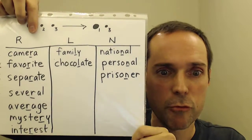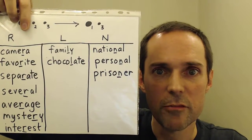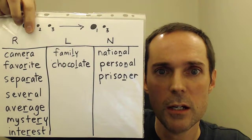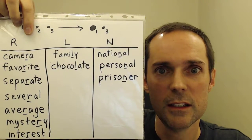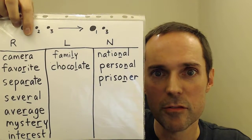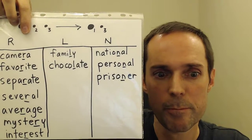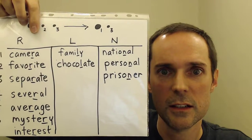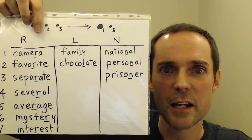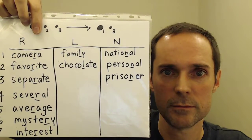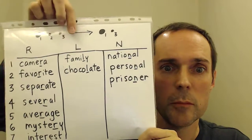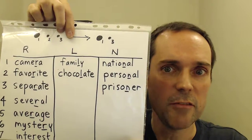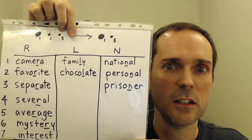Average instead of average. Mystery instead of mystery. Interest instead of interest. In the second column, the syllable we're going to leave out ends in L. We say family, chocolate.